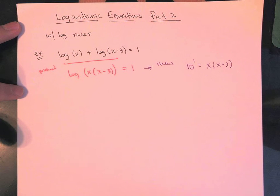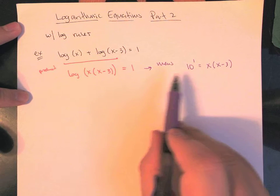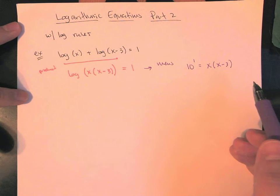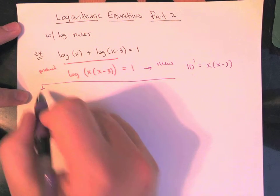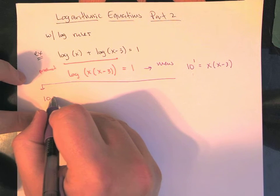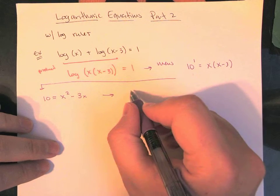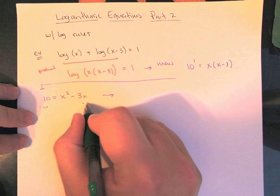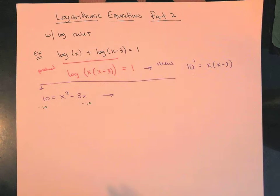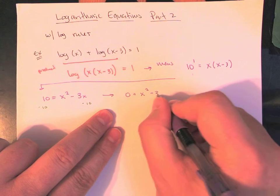This is actually going to give me more of a quadratic equation. We need these to be condensed using our log rules before we can jump into a form where we can actually solve it. Once we've done that, 10 to the 1 is just 10. On the right, distributing gives x squared minus 3x. Moving everything to one side, I want all my terms equal to 0, so 0 equals x squared minus 3x minus 10.